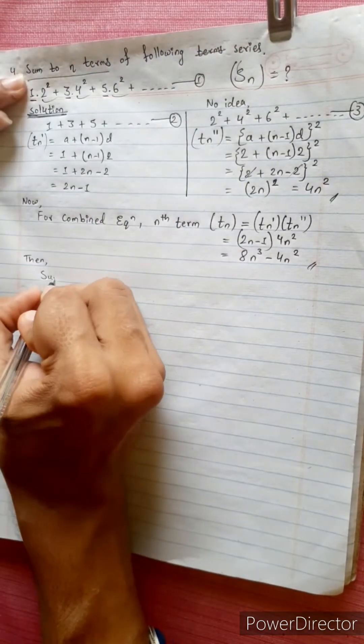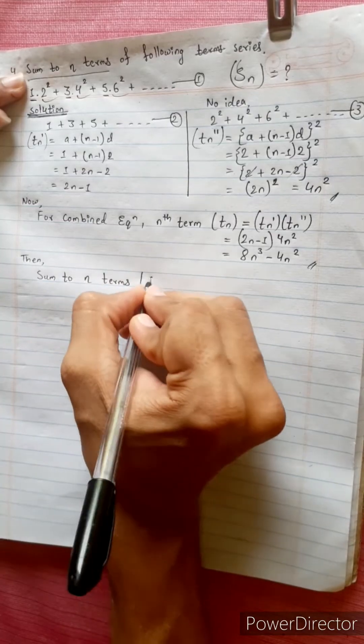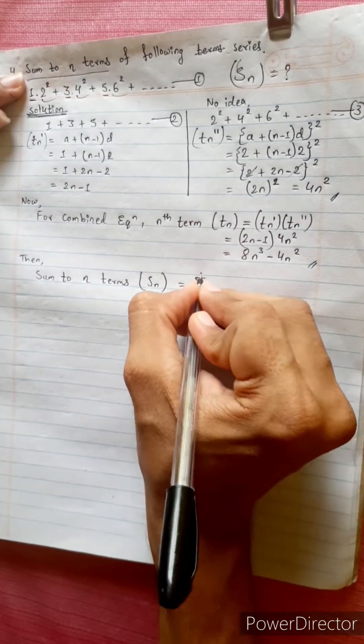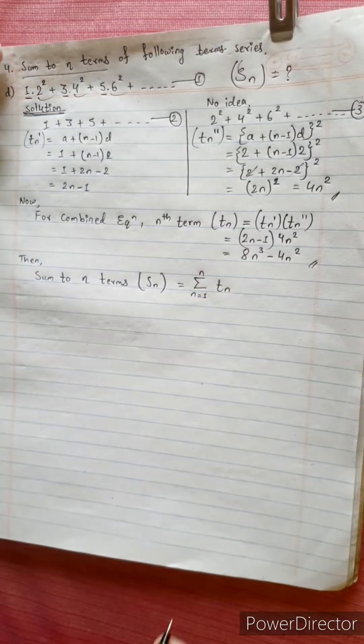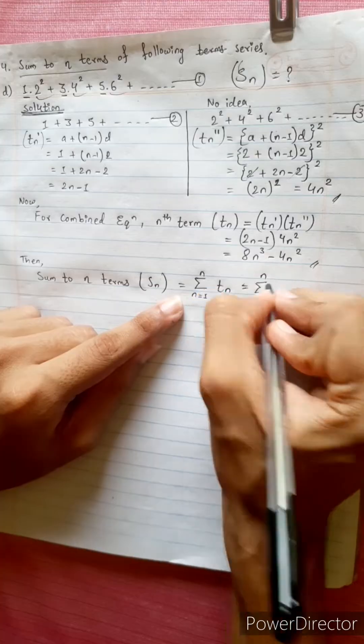Sn, sum of 2n terms, which is Sn equal to summation from n equals 1 up to n of Tn. This is the formula. Let's pass it. n equals 1 up to n, Tn.